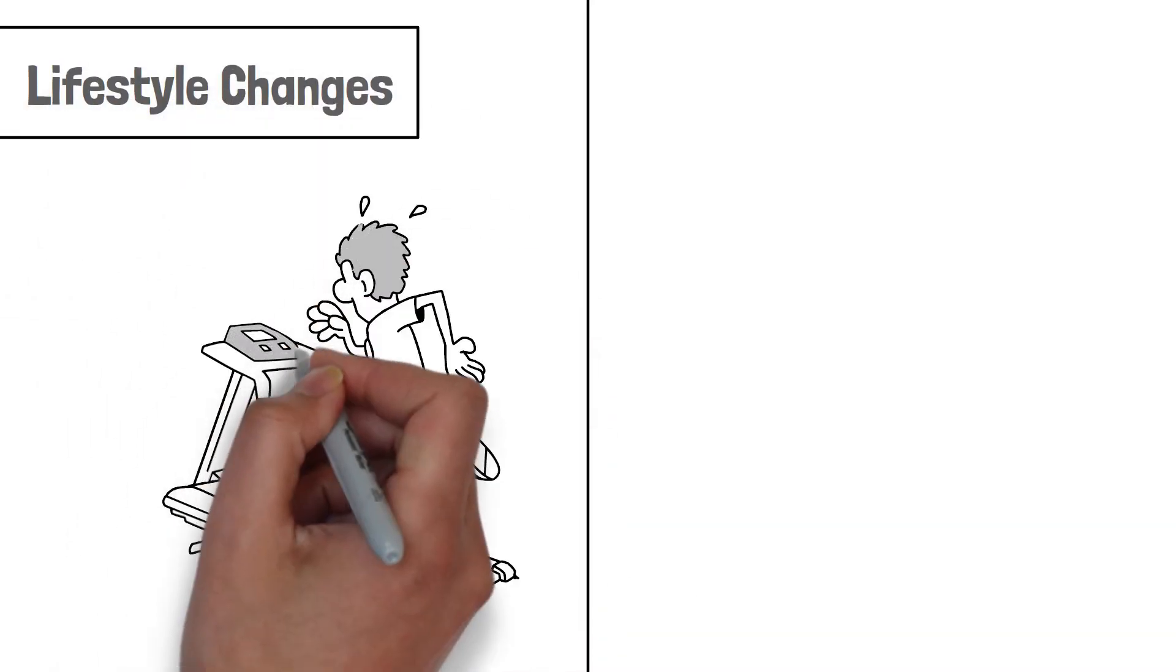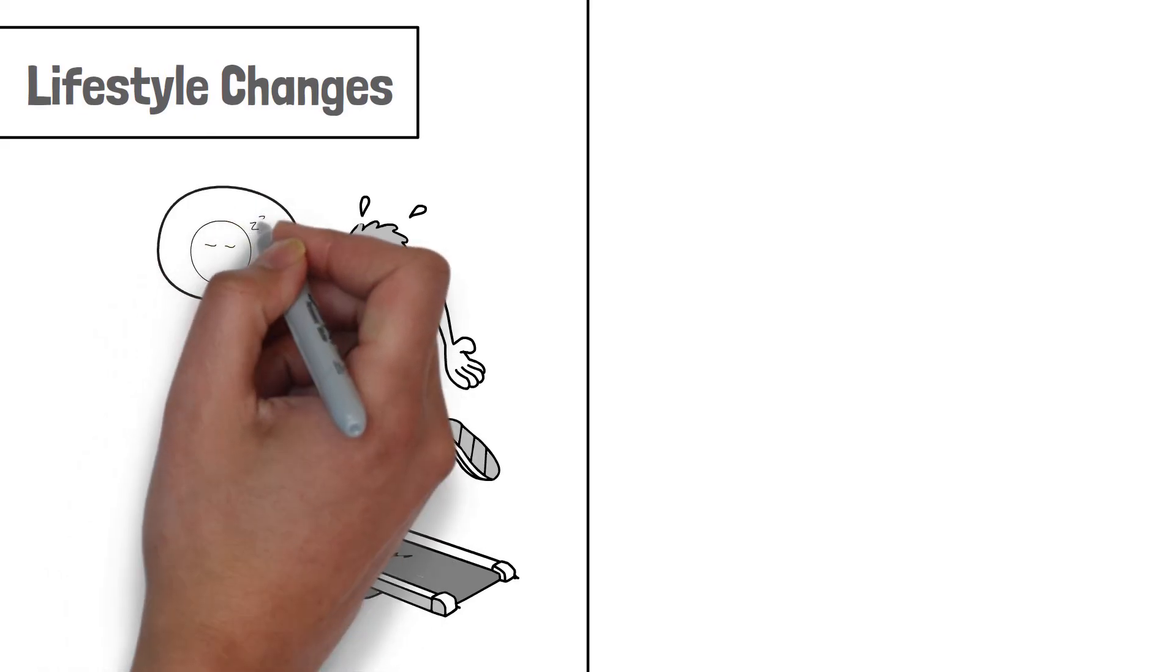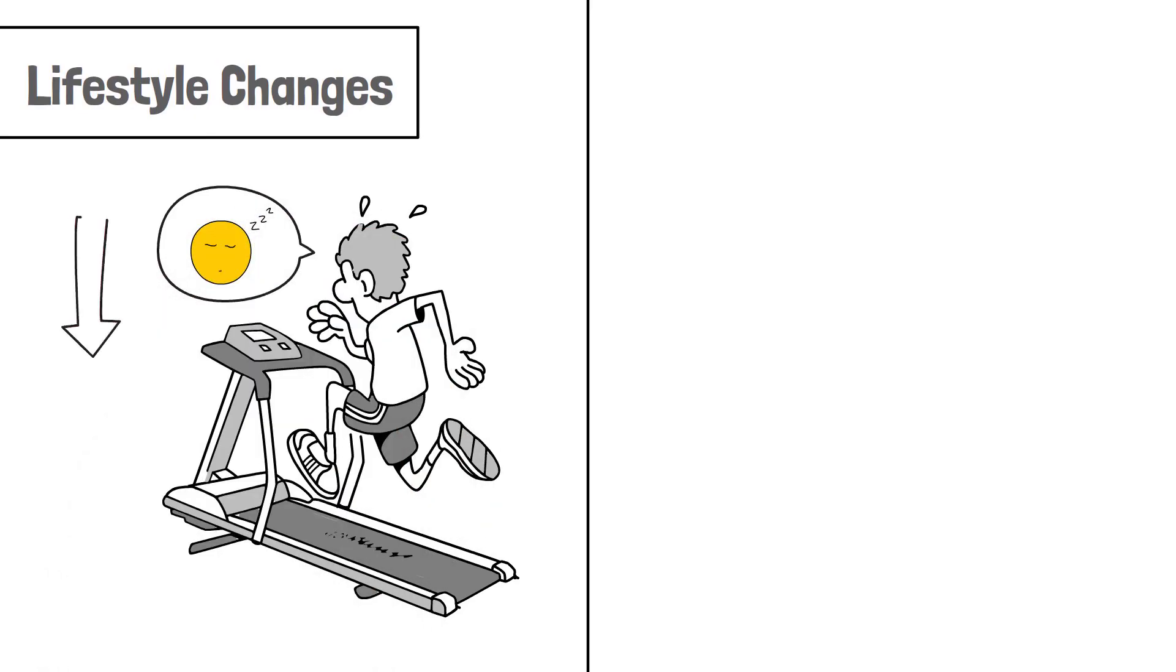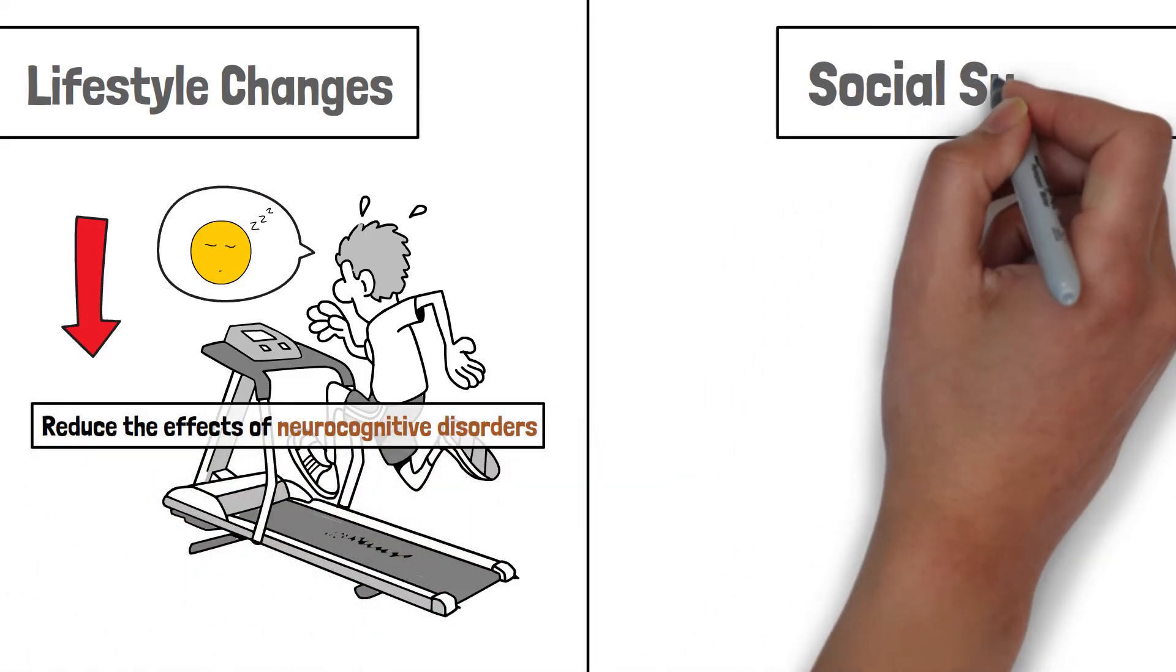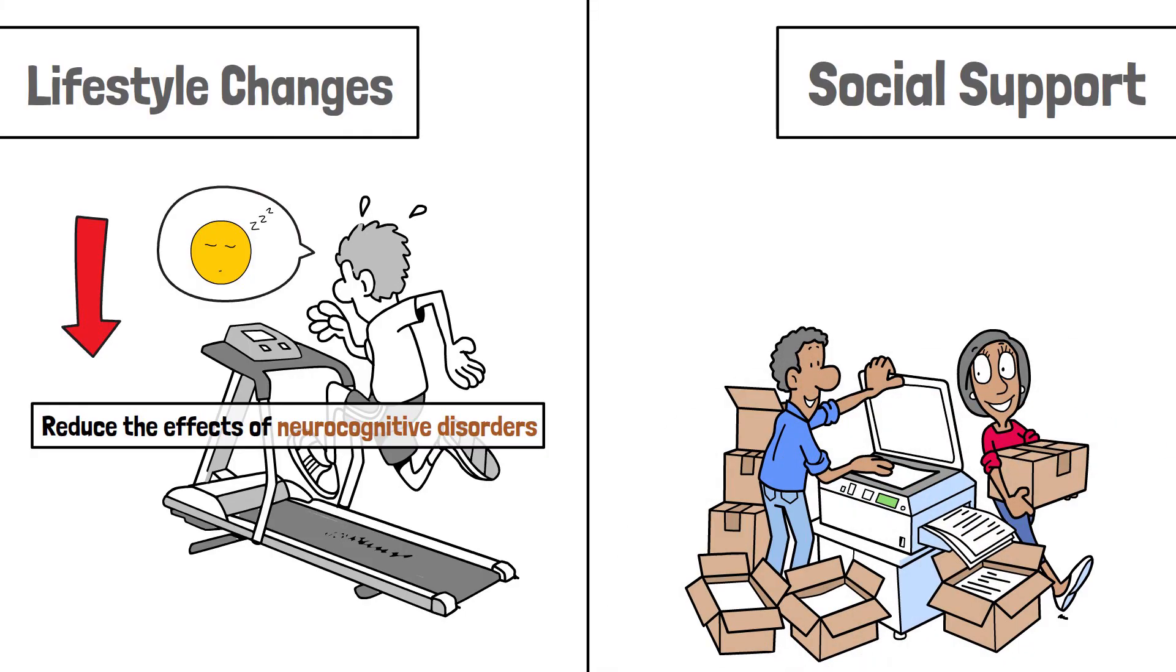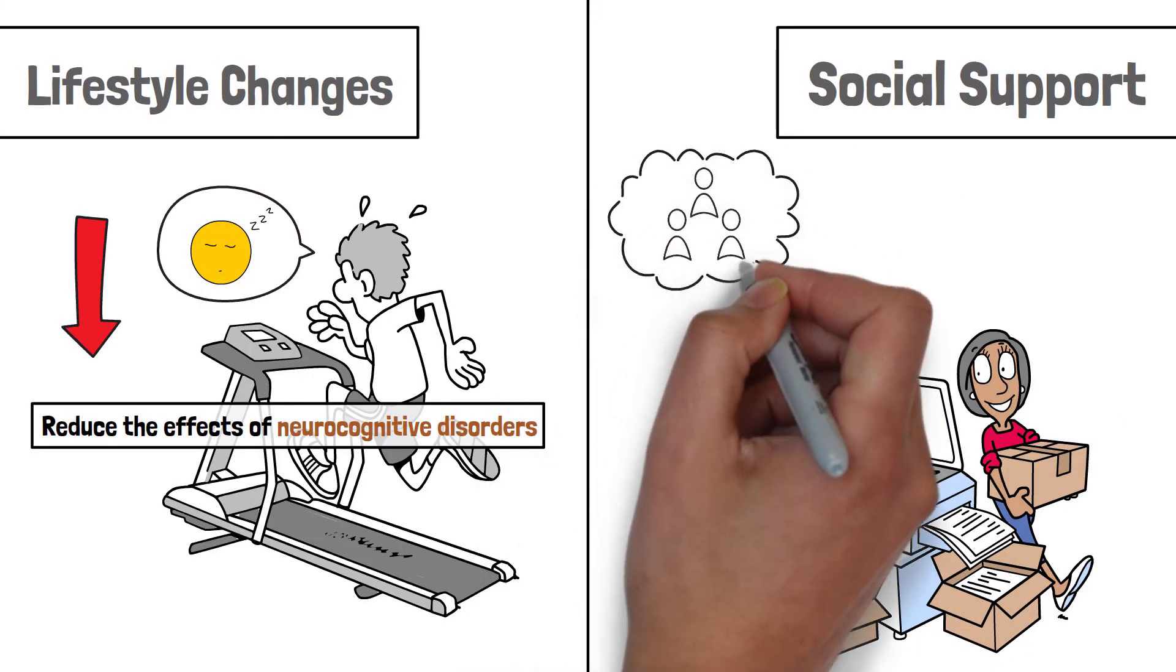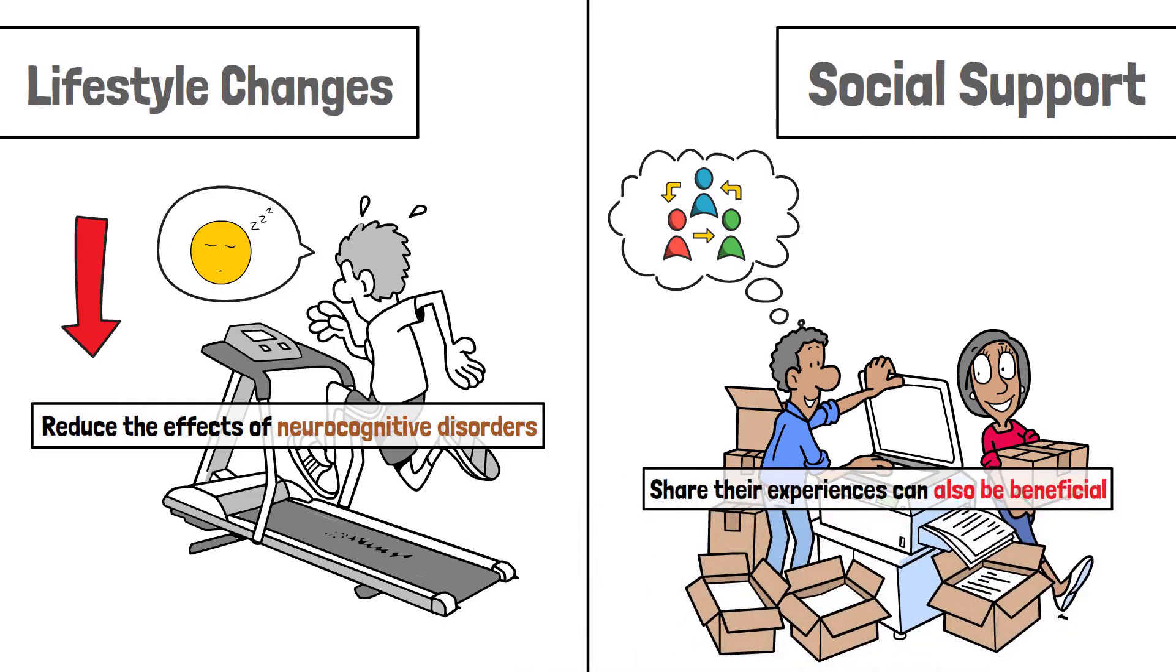Lifestyle changes. Adopting a healthy lifestyle, such as regular exercise, eating a balanced diet, getting adequate sleep, and reducing stress can also reduce the effects of neurocognitive disorders. Social support. The support and companionship of family and friends significantly help individuals cope with this condition. Joining support groups where others share their experiences can also be beneficial.